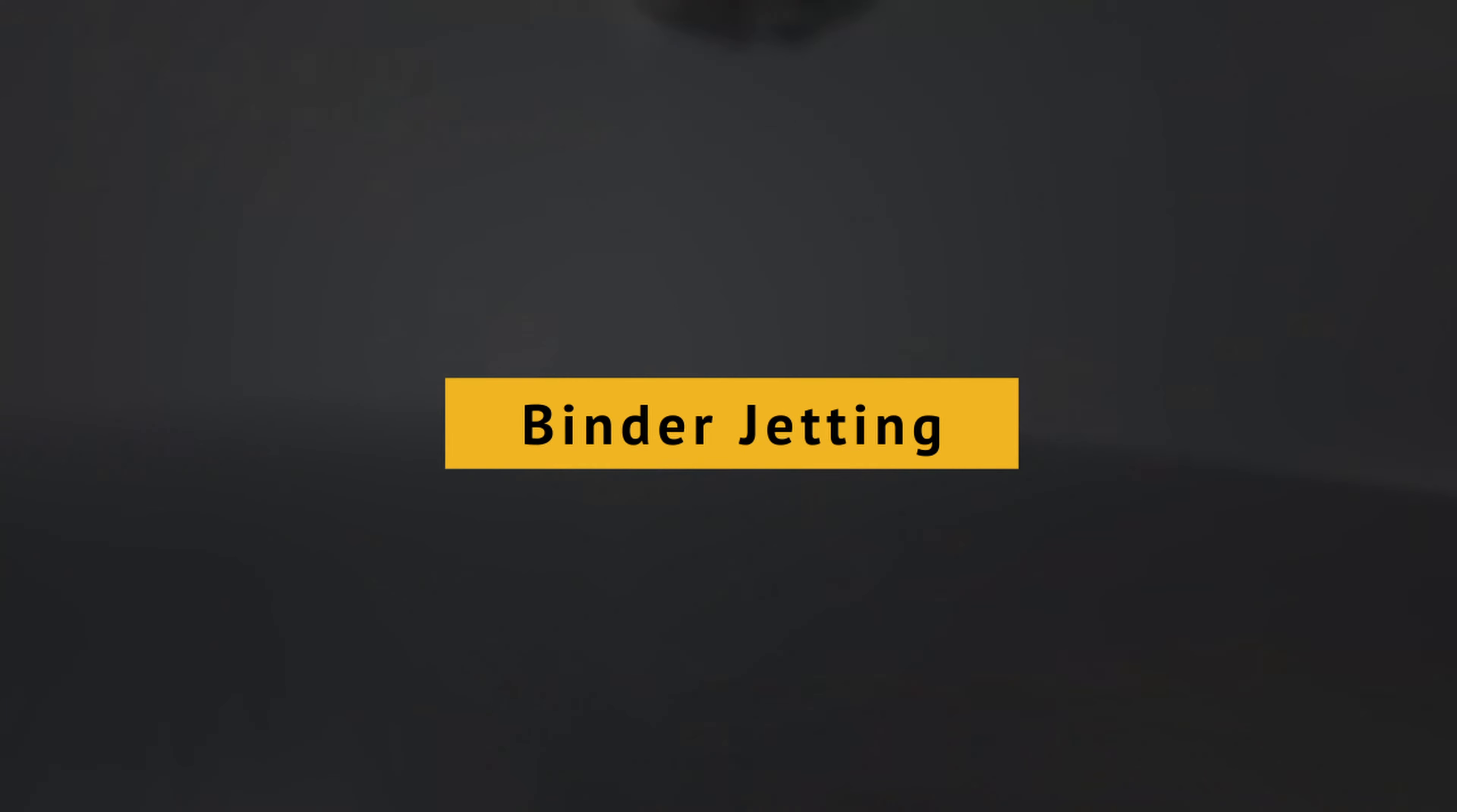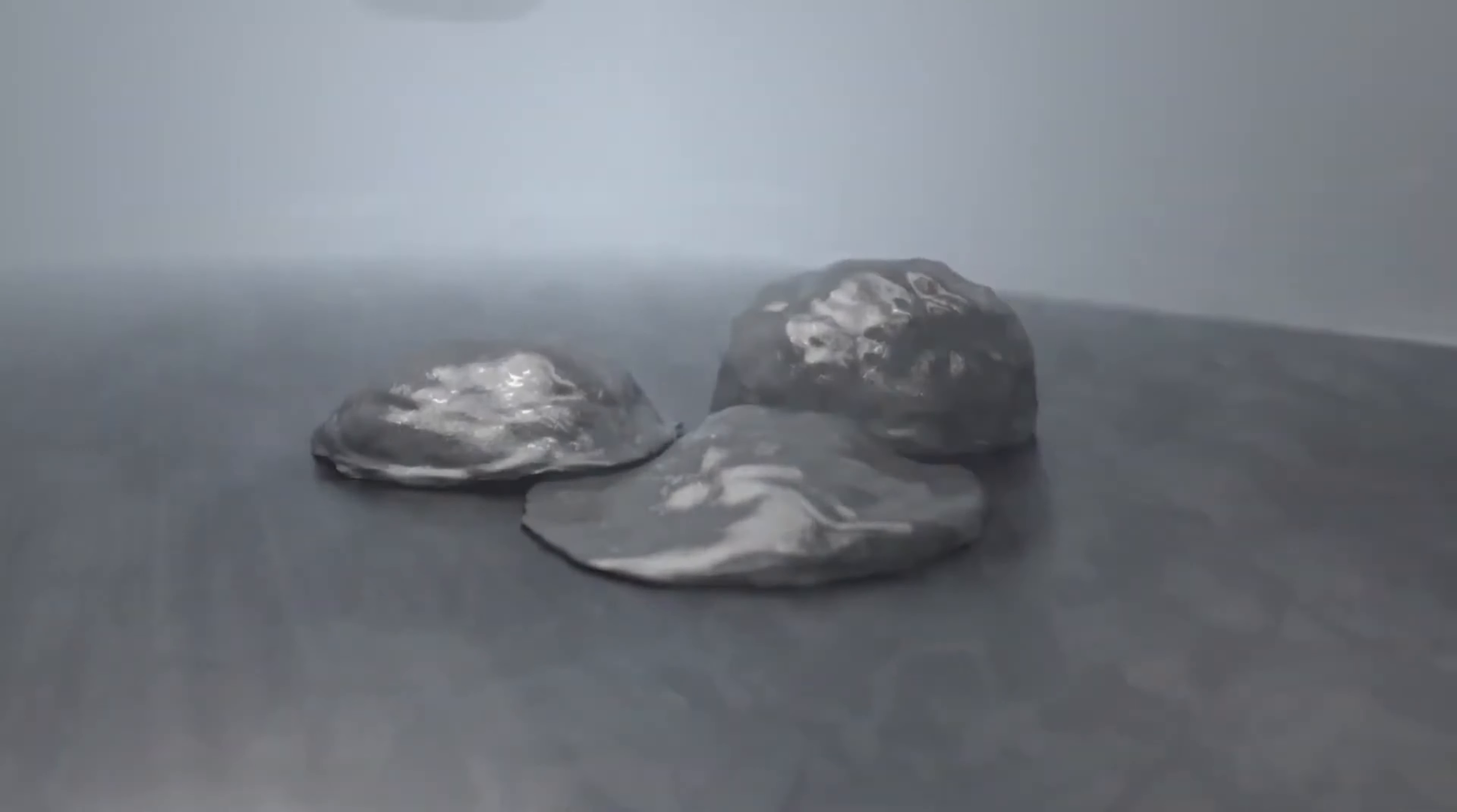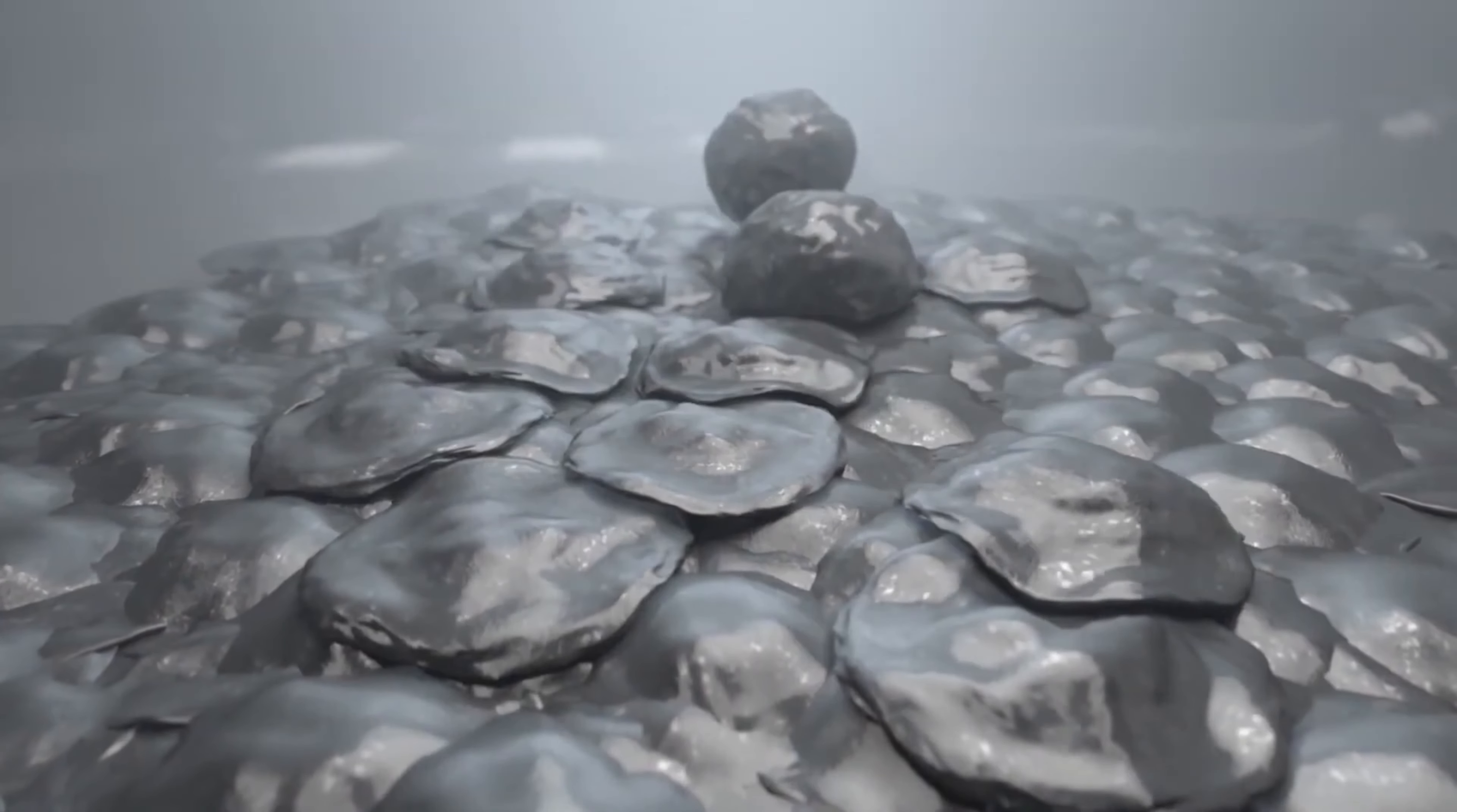Binder jetting, or BJ, is a process in which an industrial printhead selectively deposits a liquid binding agent onto a thin layer of powder particles.